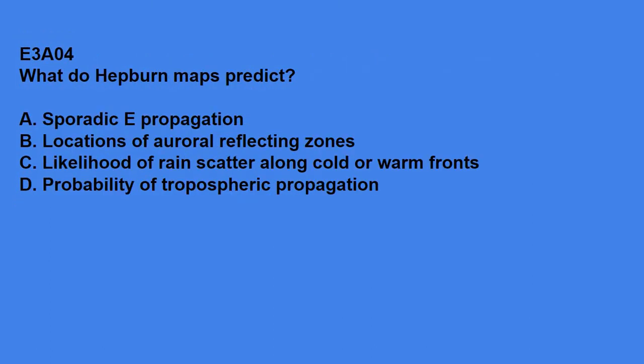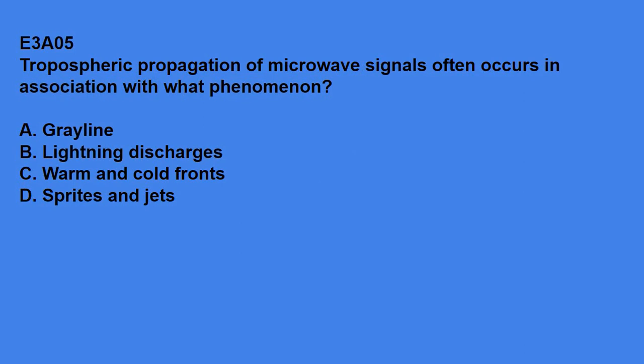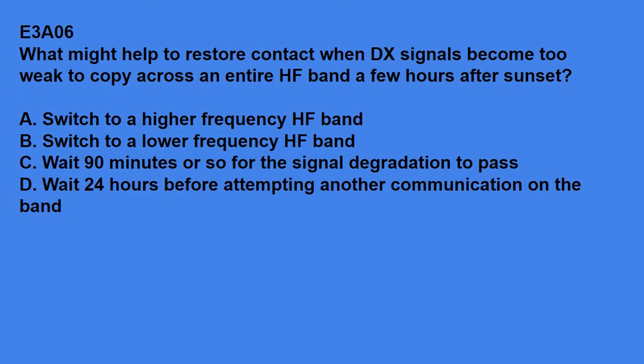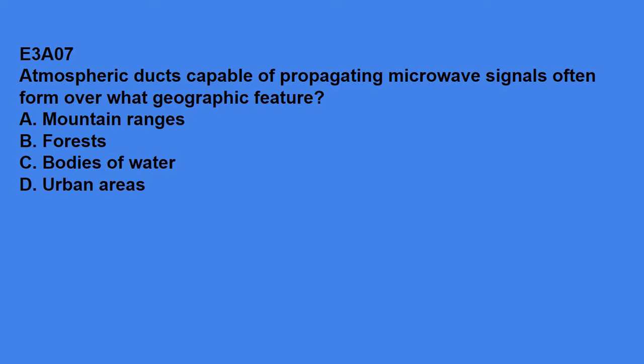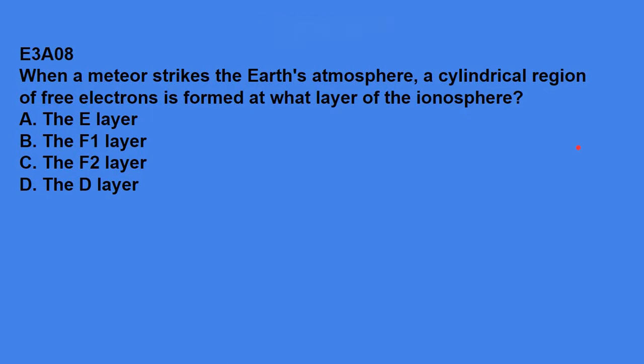E3A04, what do Hepburn maps predict? The answer is probability of tropospheric propagation. E3A05, tropospheric propagation of microwave signals often occurs in association with what phenomenon? E3A06, what might help to restore contact when DX signals become too weak to copy across an entire HF band a few hours after sunset? Switch to a lower HF frequency. E3A07, atmospheric ducts capable of propagating microwave signals often form over what geographic feature? The correct answer is bodies of water. E3A08 says, when a meteor strikes the earth's atmosphere, a cylindrical region of free electrons is formed at what layer of the ionosphere? The answer is the E layer.